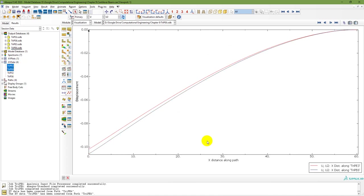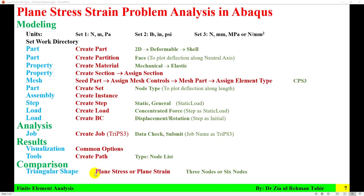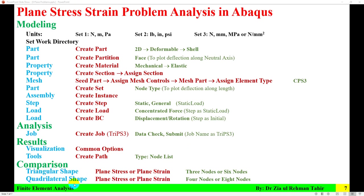Each time you change element type, you must update the node set. For plane strain, select family as plane strain. First, linear plane strain — CPE3 — create a new node set, create a new job named 'Tri_PE3', submit, open results, create a path, get field output U2, plot and save as 'Tri_PlaneStrain_3node'. Then for 6-node plane strain — CPE6, a 6-node quadratic plane strain triangle — delete the previous node set, create a new one, create job 'Tri_PE6', submit, create a new path, get U2, plot and save as 'Tri_PlaneStrain_6node'. Triangular plane stress and plane strain with 3-node and 6-node are all done.